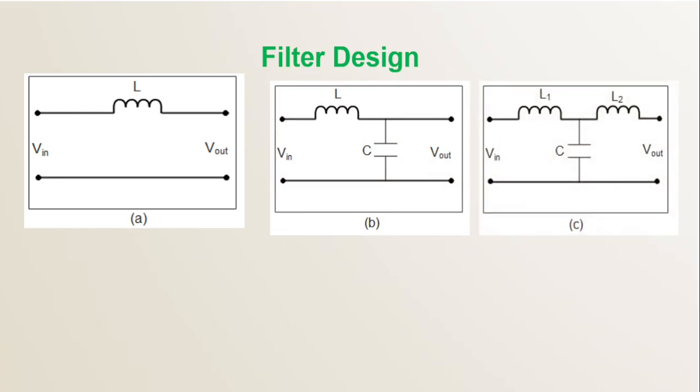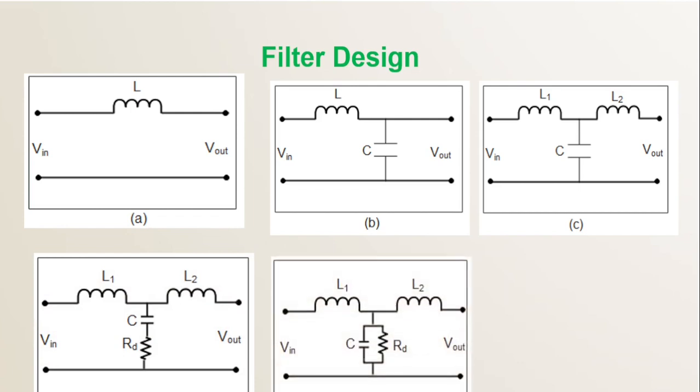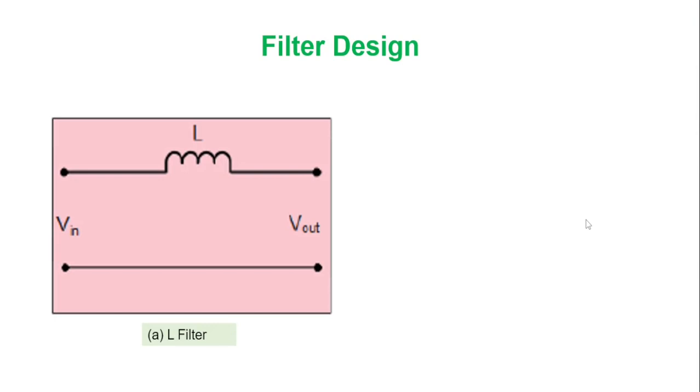An L filter is a first order filter with an attenuation of -20 decibels per decade that can be employed in inverters with high switching frequencies. This type is less costly and it's very easy to implement.